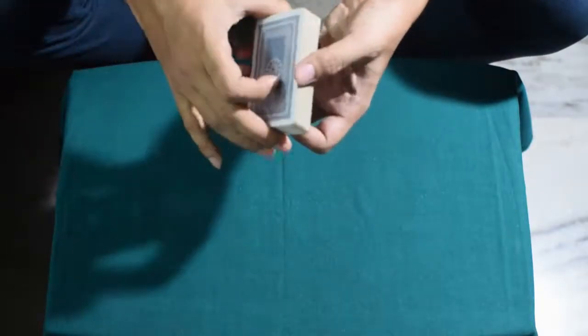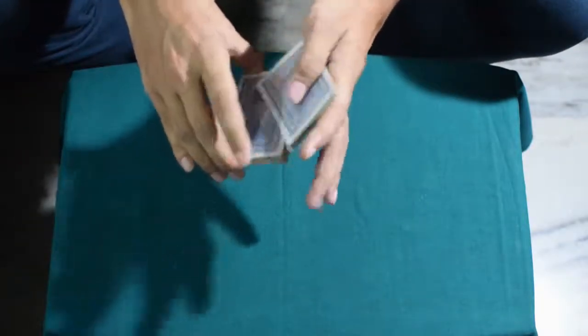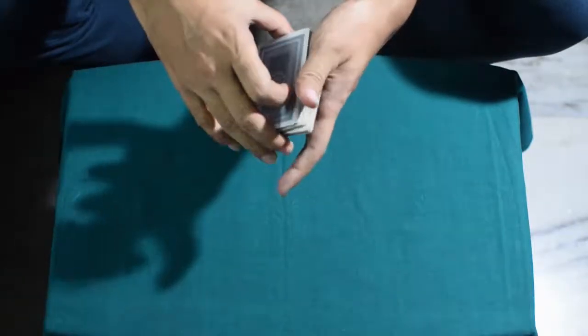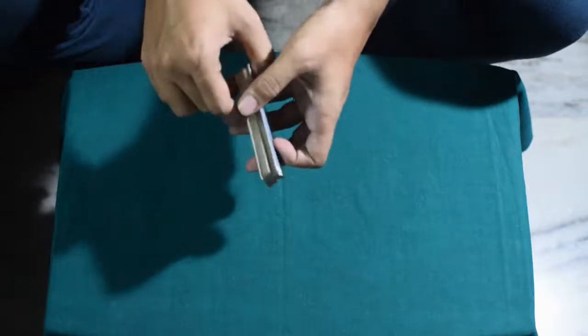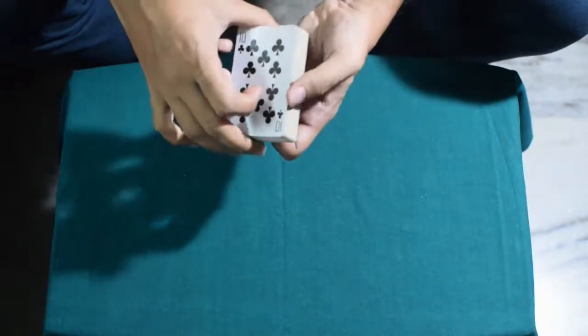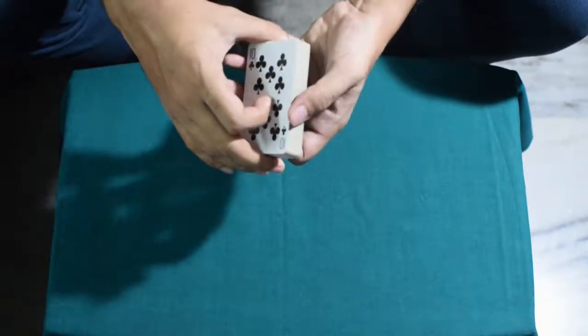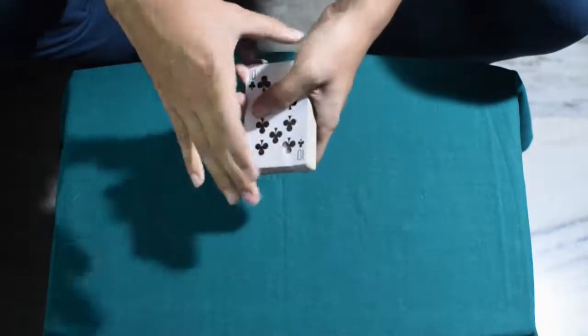And you shuffle off like this, and then you can give a few false cuts like this, or you can simply continue from there. It doesn't matter. You give a false cut like this, and then you turn over the deck like this.